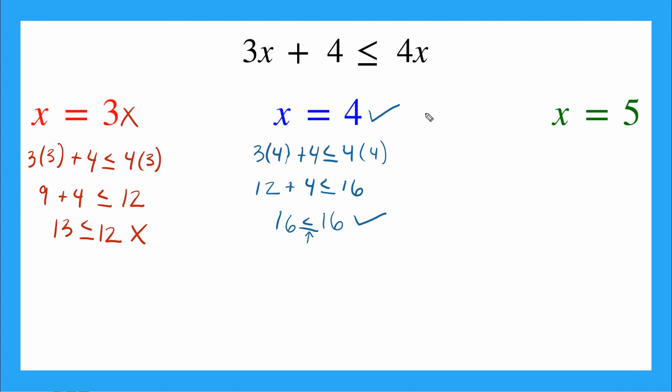Last one here, we're testing x is equal to 5. So I have 3 times 5 plus 4 is less than or equal to 4 times 5. I do my multiplication first. I have 15 plus 4 is less than or equal to 20. I go ahead and do my addition. I get 19 is less than or equal to 20. Is that true? Yeah, 19 is less than 20. So that is true. And I'll put my check mark over here. x equals 5 is a possible solution.